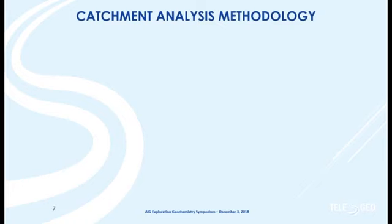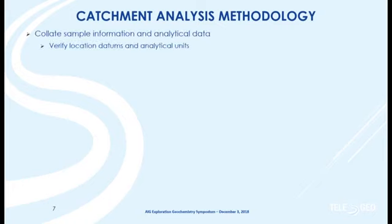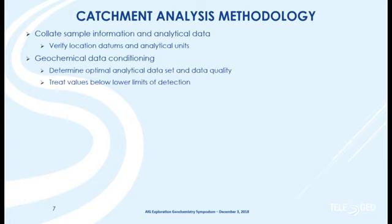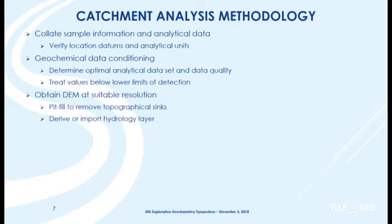How do we go about the process of a catchment analysis? We have to pull together our data sets, make sure everything is in the right datum. We have to bring our geochemical data in, condition it, and decide what elements we're going to use. Some data sets are going to be highly censored for some elements and we don't want to use that in a multivariate analysis. We need to obtain a suitable DEM — different DEMs are going to give you different results when you calculate hydrology from them.